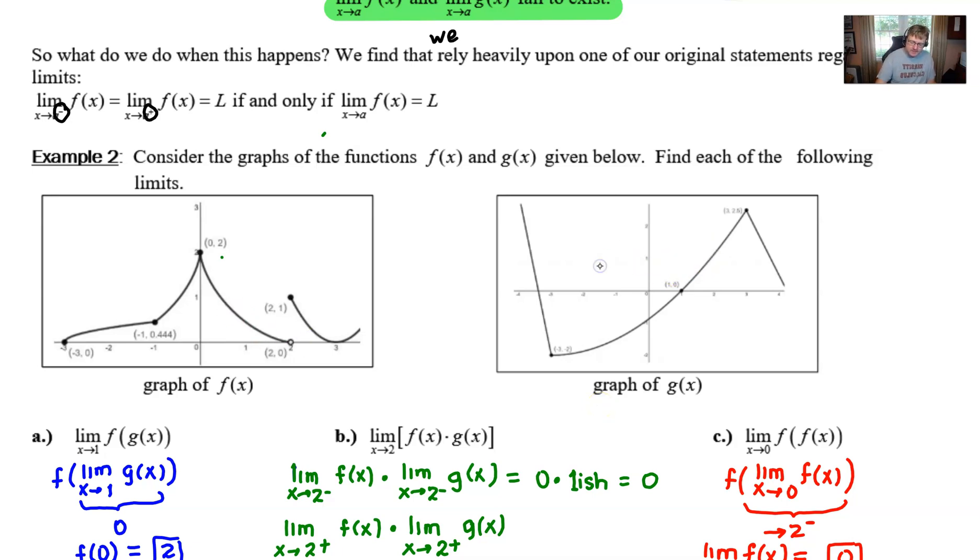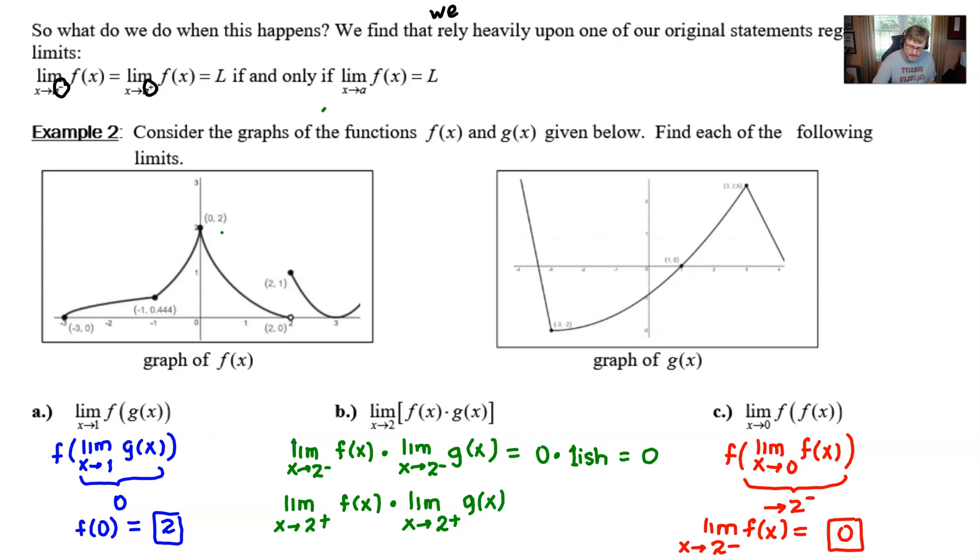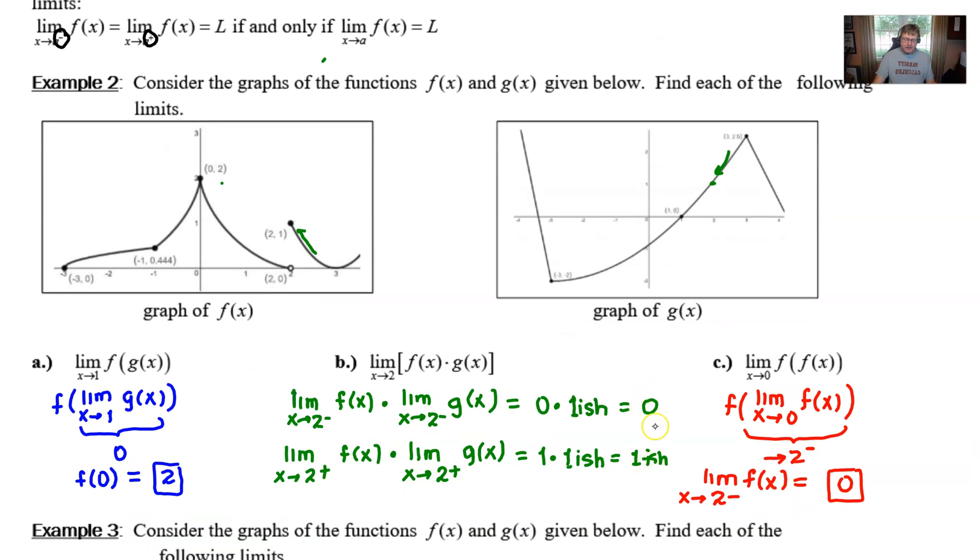Let's do the same thing for the limit as x approaches two from the right. In this case here we have for our f of x, x approaches two from the right and we are getting this value of one. Then we have the limit of g of x which again is going to approach this value of two from the right, that's still going to give us this value one-ish. Well one times one-ish is probably very close to something close to one. I'll call it one-ish again. And if you're bothered by this ish you could have just used one and it still would have conveyed the same answer. But what we see here is that these two results of zero and one or close to one are not in agreement with each other and so as it turns out this limit does not exist.